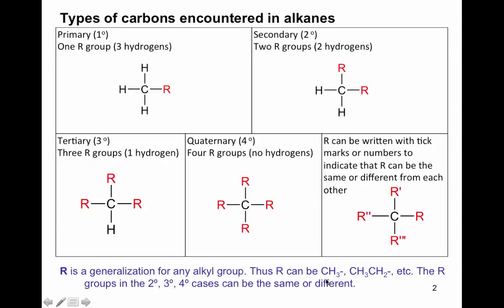Here are some examples. Let's take a look at the quaternary written in the middle of the screen versus the one on the right-hand side. They're both quaternary carbons because there are four R groups. Sometimes when we have R groups, we might want to designate them as being different from each other. One technique is to use tick marks: the first R group has none, the second one has one tick, the next two, and so on.